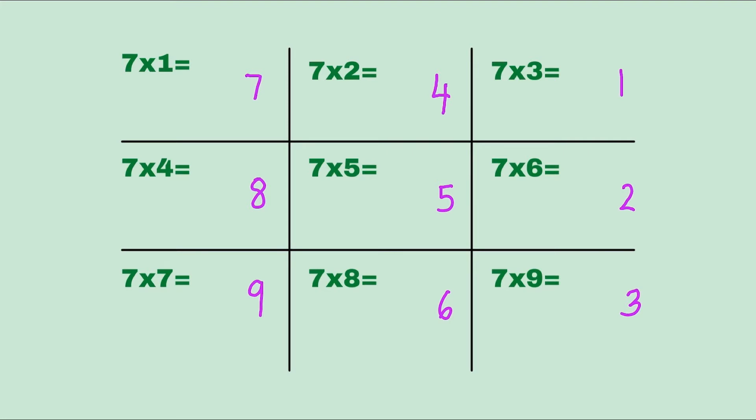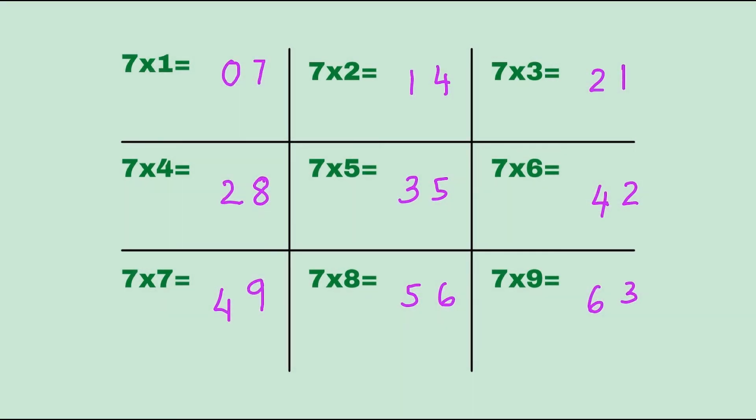Start zero, one, two. Be careful, the two is going to be repeated. Two, three, four. Again the four is repeated. Four, five, six. There you have it, the multiplication table of seven! Let's try: seven times five, thirty-five. Seven times nine, sixty-three.